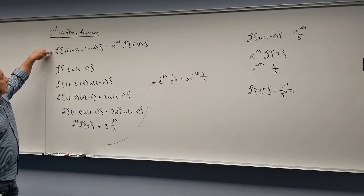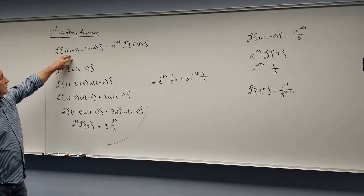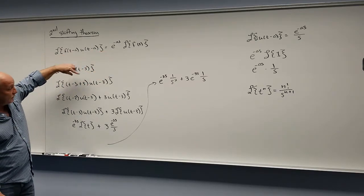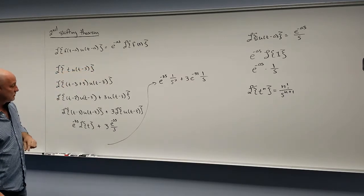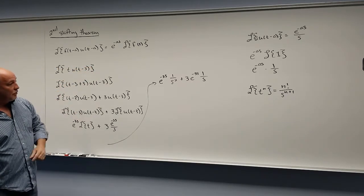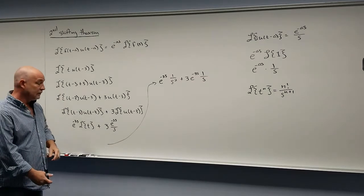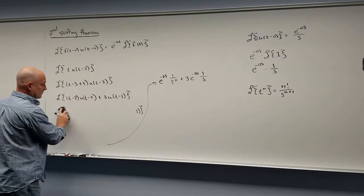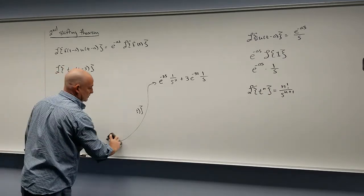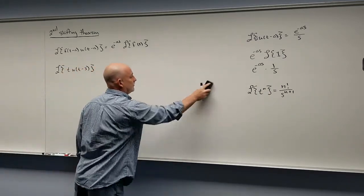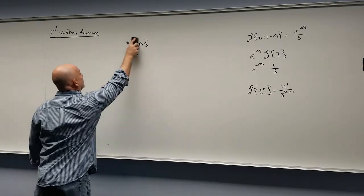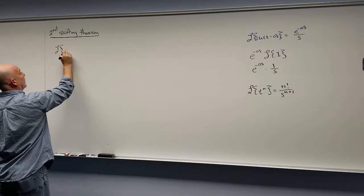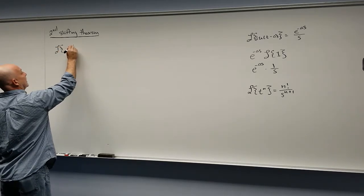When using the second shifting theorem to go from the t-world to the s-world, make sure every function of t has the same shift as your unit step function. Once you compensate for that shift, do the Laplace transform of each piece. Now, the way we see this quite often is actually going in the other direction — let's do a straightforward inverse Laplace example.